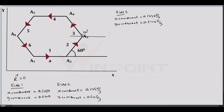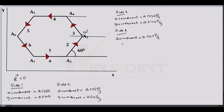For side 4, drawing the x-axis, we find this angle from the positive x-axis is 180 degrees. So the x-component equals a·cos(3π/3) — writing 180° as 3π/3 — and the y-component equals a·sin(3π/3).